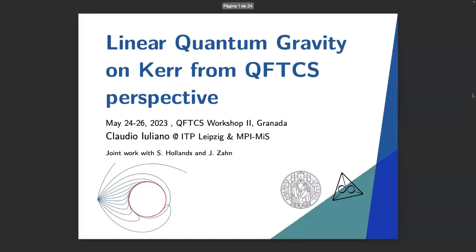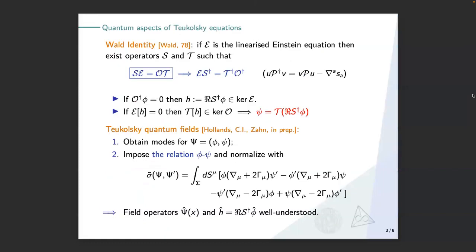Here is the idea: you first obtain the modes for your Teukolsky field φ, then you impose the relation between C and φ and normalize with the symplectic form. Once you define the field operators — putting hats on C, which means putting hats on your field φ — you can then reconstruct the metric perturbation. It's straightforward.